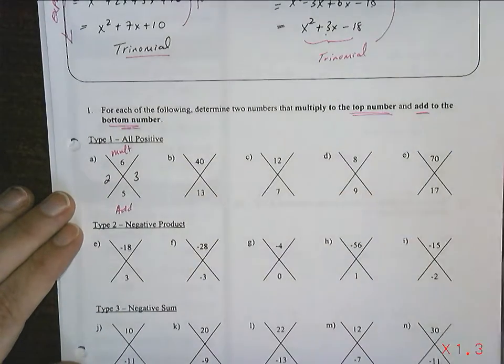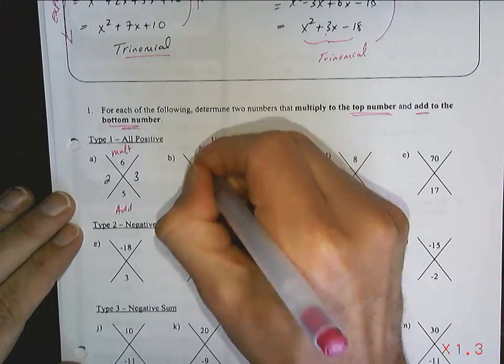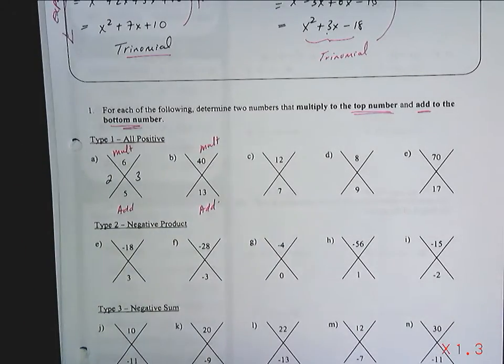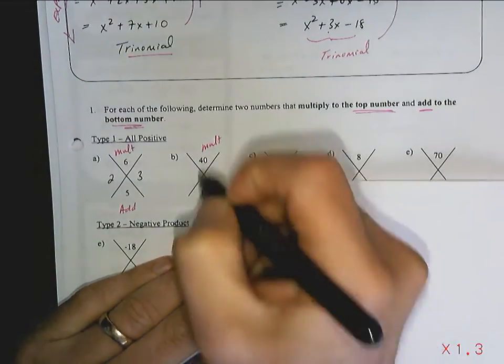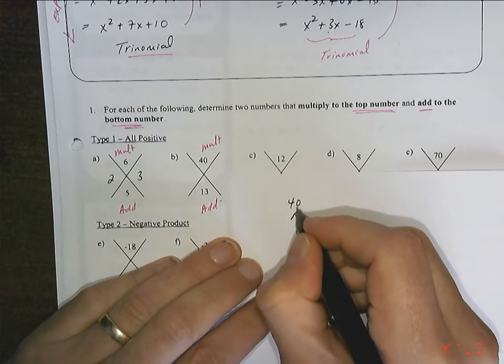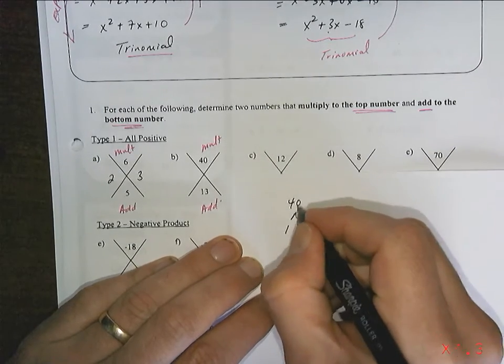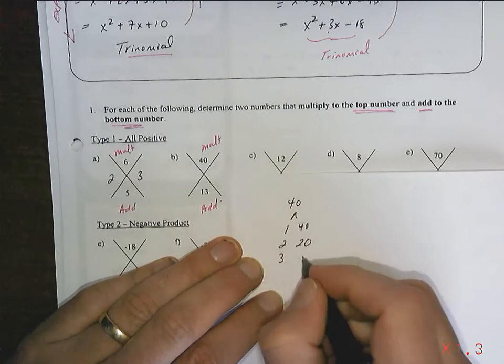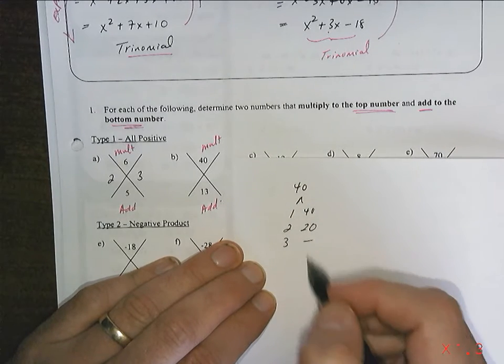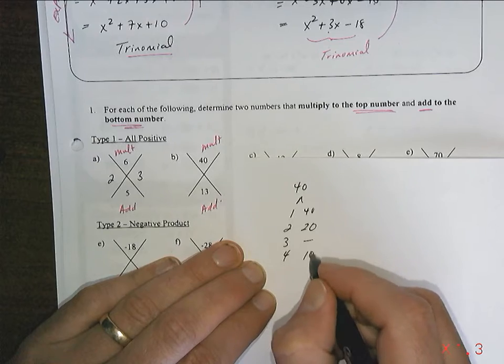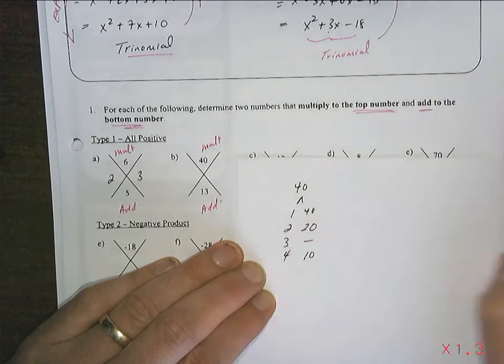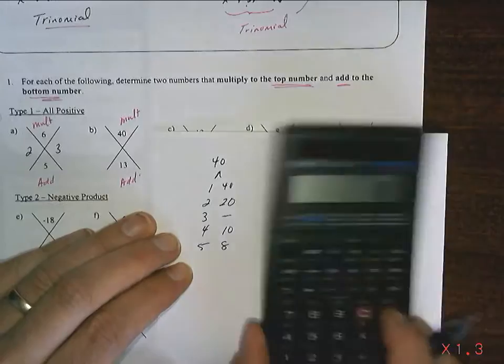What about 40? We want two numbers that will multiply to 40 and add to 13. Now, 40 is a harder number to do. I suggest you work out a factor tree. Factor trees are going to give you all of the pairs of numbers that multiply to give 40. So if I take 40 and divide by 1, I get 1 and 40. Divide by 2, I get 2 and 20. Divide by 4, we get 10. Divide by 5, 40 divided by 5 is 8.